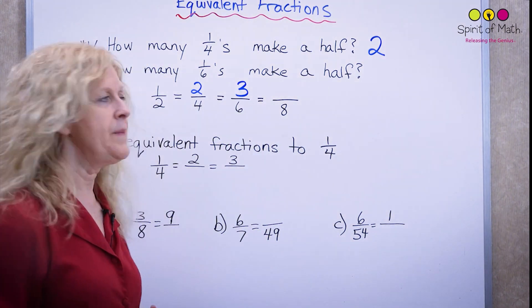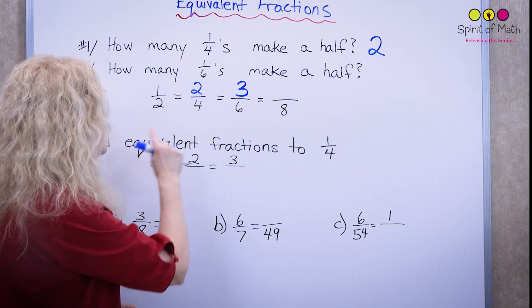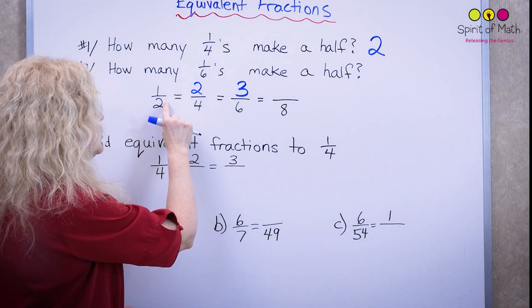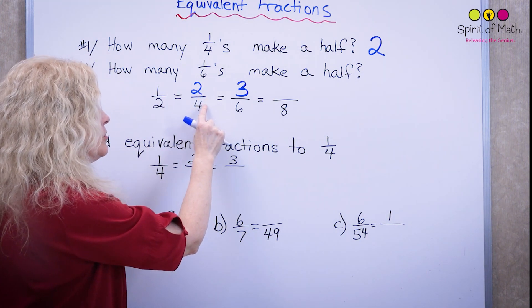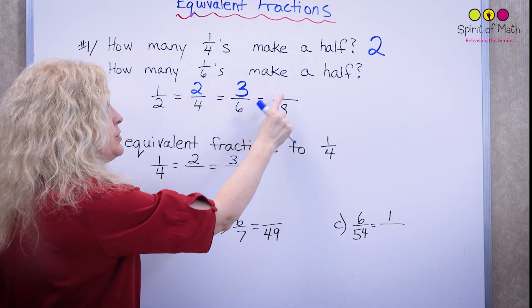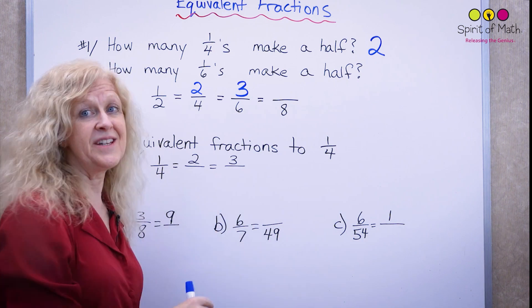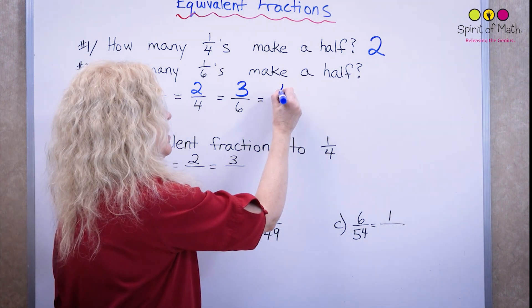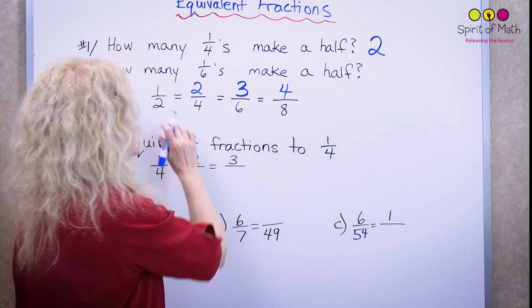Now notice something that's happening here. First of all, you have one times two is equal to two. Two times two is equal to four. Three times two is equal to six. So what times two is equal to eight? Well, four. So four-eighths is equal to one-half.